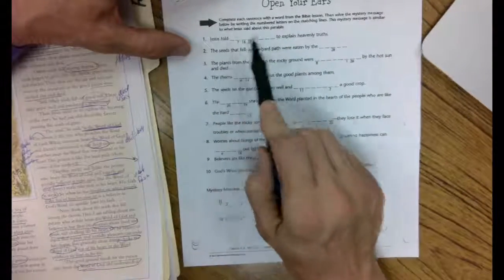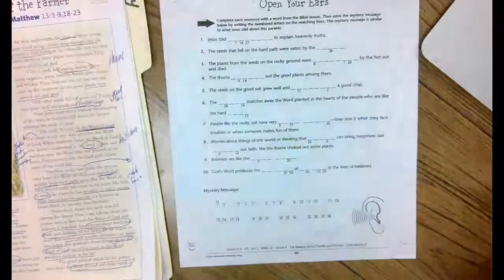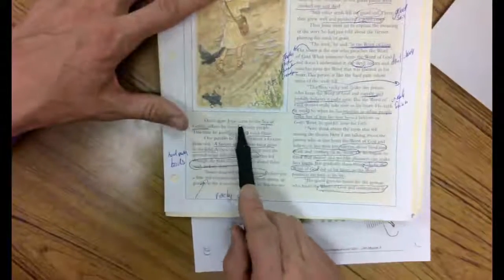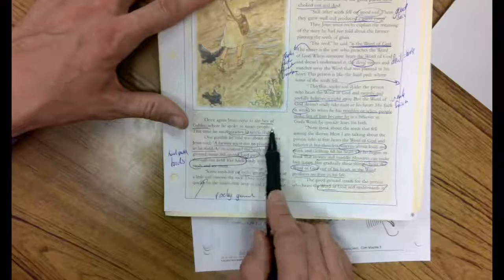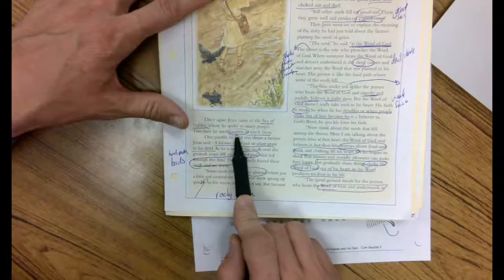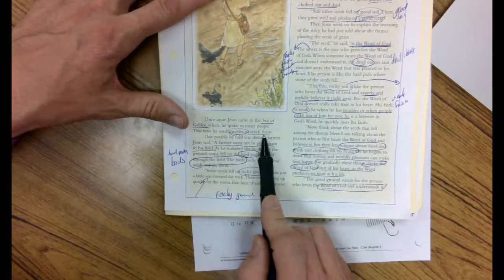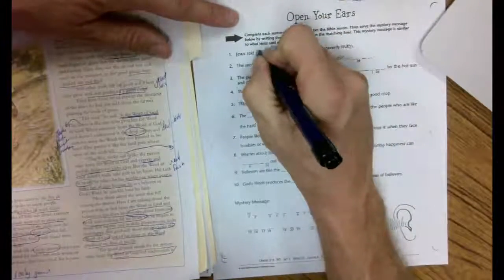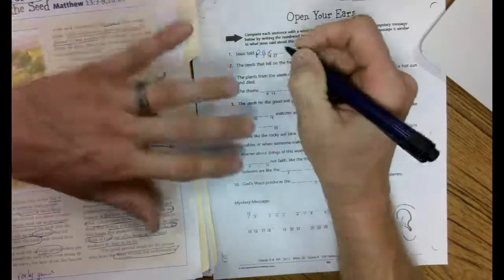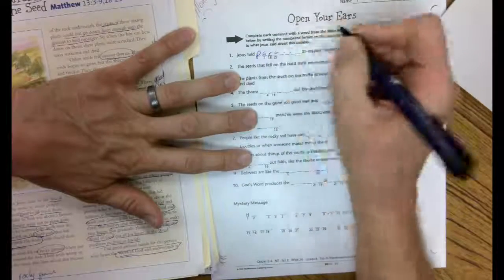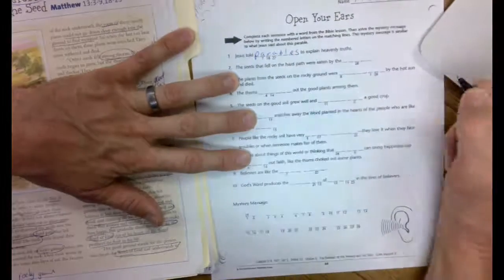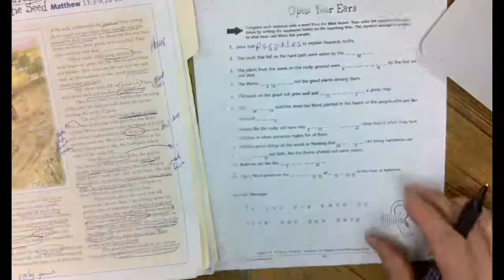All right, so let's start with number one. He told blank to explain heavenly truth. So here's how I would do my assignment. Once again, Jesus came to the Sea of Galilee where he spoke to many people. This time he used parables to teach them. Parables. He told parables, P-A-R-A-B-L-E-S, to explain heavenly truth.